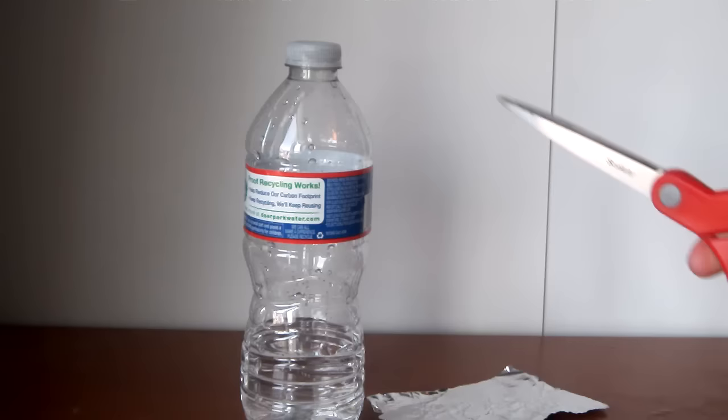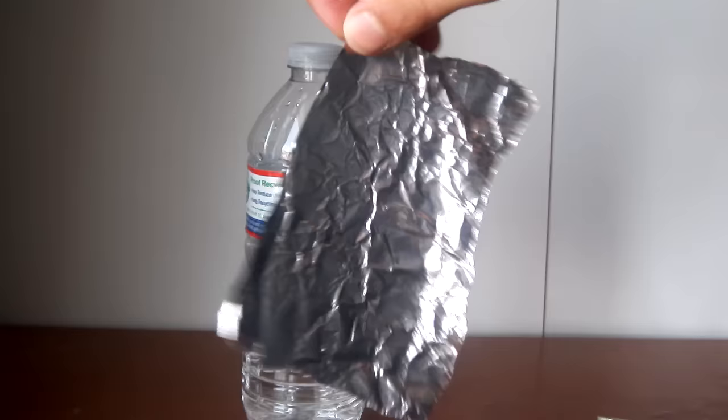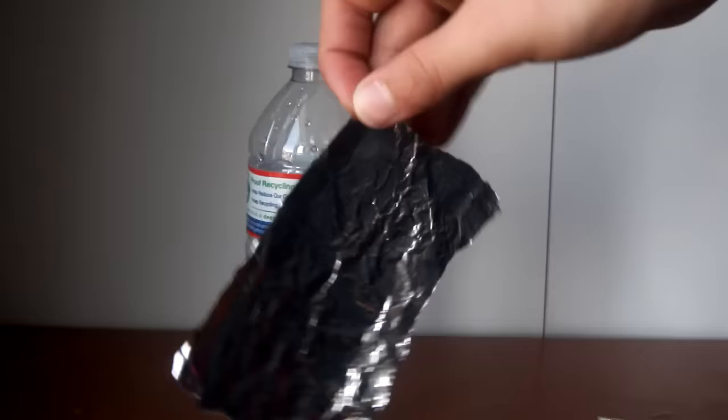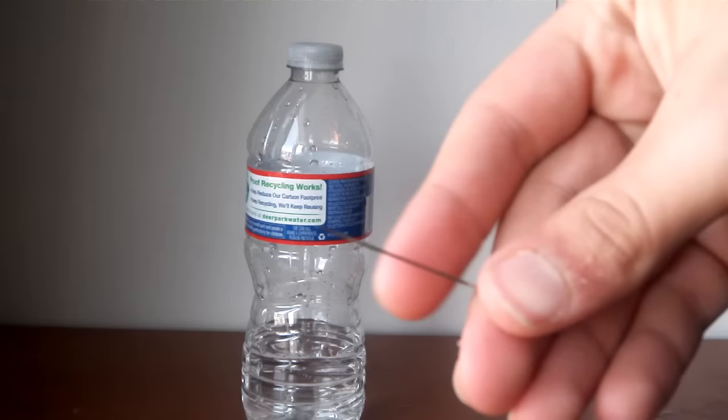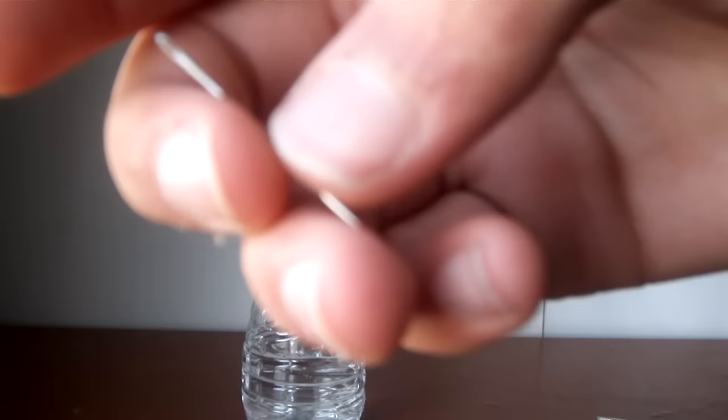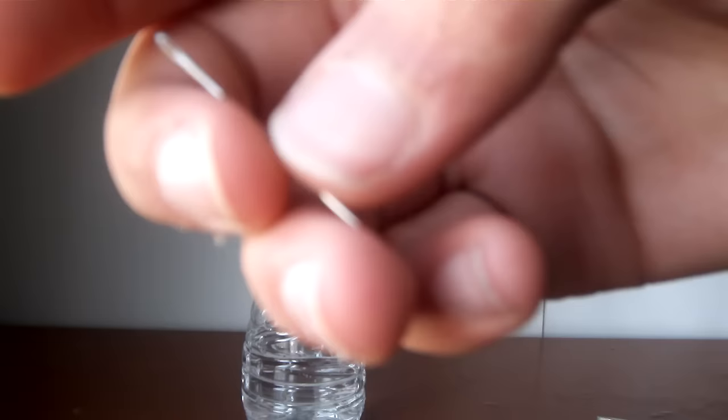You need some simple materials that everyone has around the house. Scissors, aluminum foil - just a little bit, just enough to cover the bowl, which is going to be the top. A towel, and a sewing needle just to make the air pocket holes for the bowl.